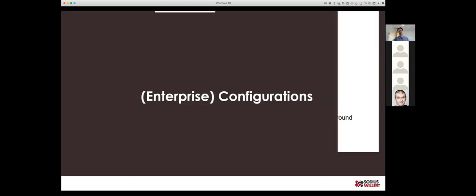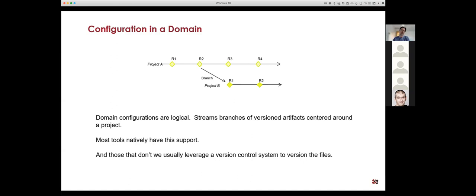When we talk about enterprise configuration, one thing we need to look at is how we've thought of configurations in the past. I've been doing this for about 25 years. When we started talking about configurations, they were often in source control — so concepts like versions, baselines, and branches are common and native to all of us. We also do that logically in tools like requirements management tools such as DOORS, where we understand versioning within a tool.